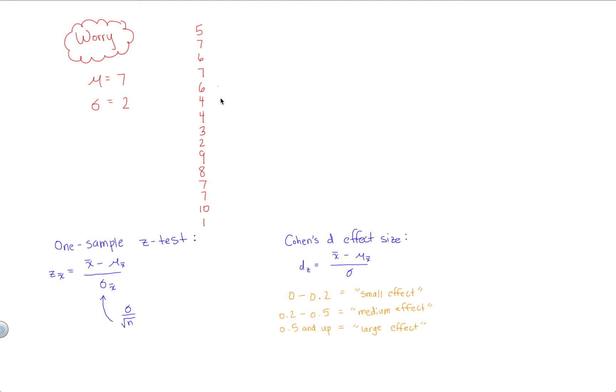And to do this, you collect a sample of 15 people. You have them meditate for five minutes. And you ask them on a scale of 1 to 10 how worried they now feel. So in this case, because we have 15 different people, we're going to go ahead and write n equals 15.